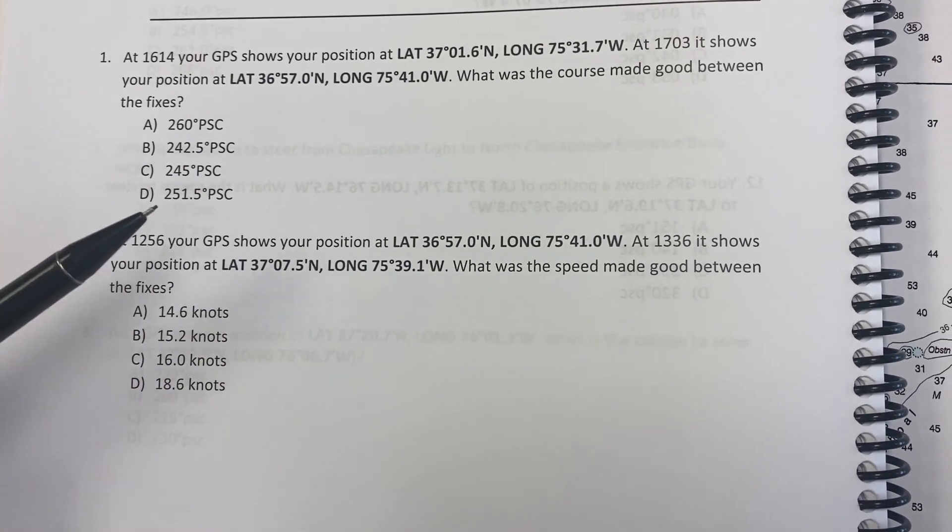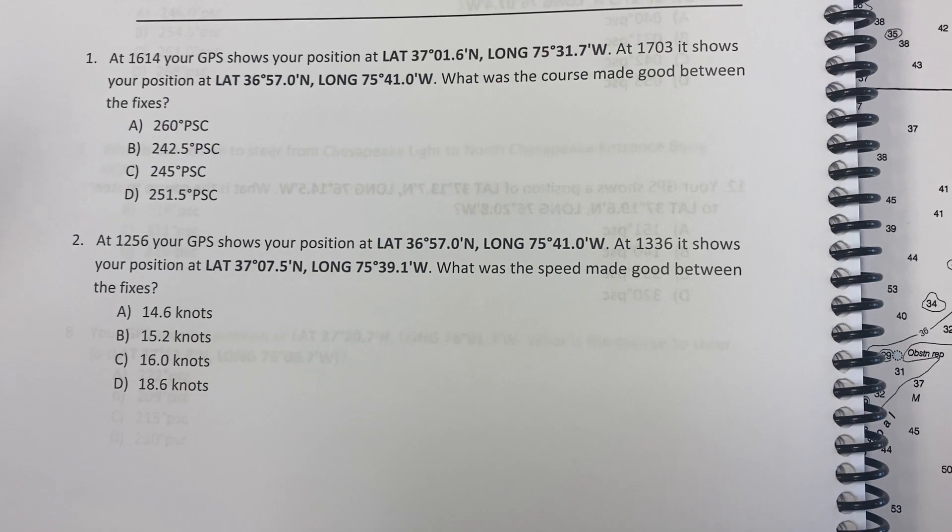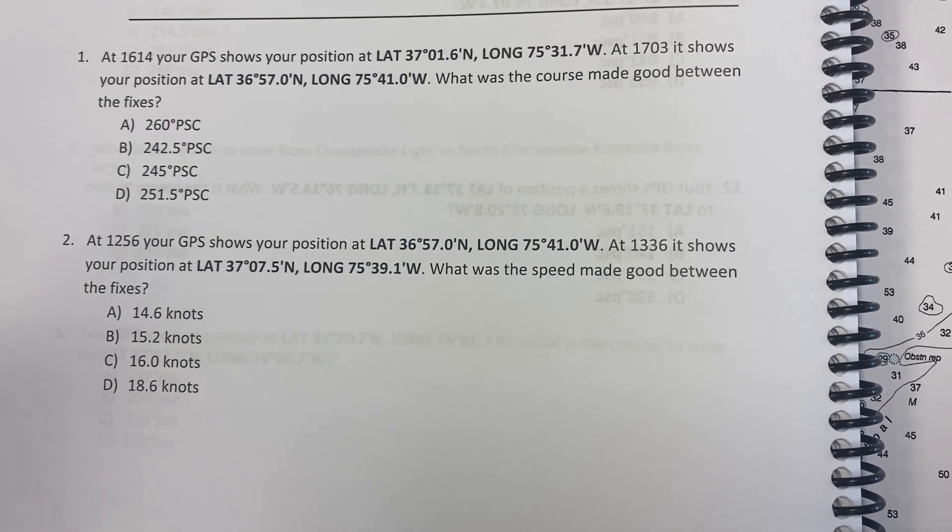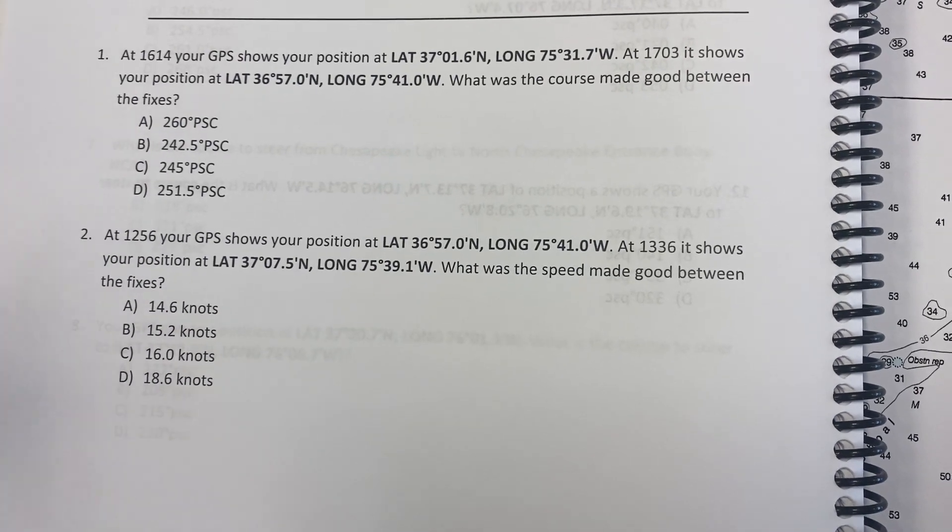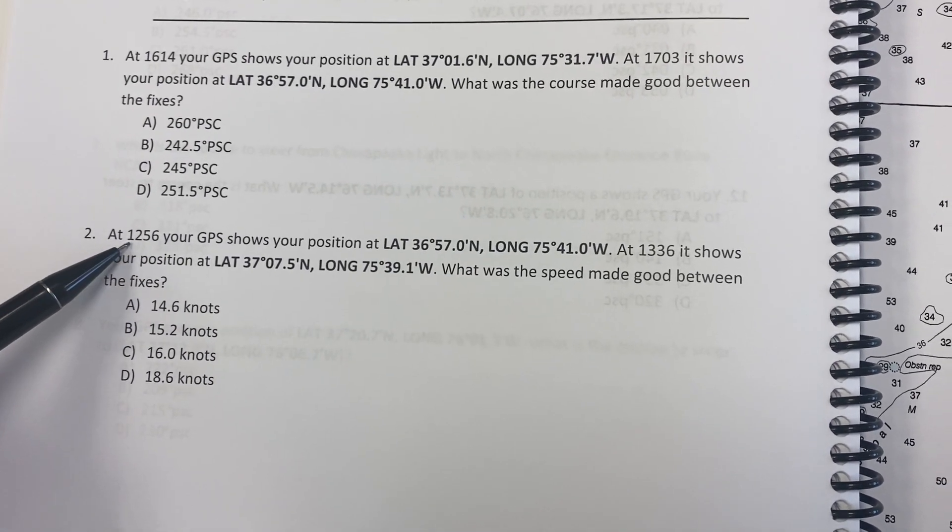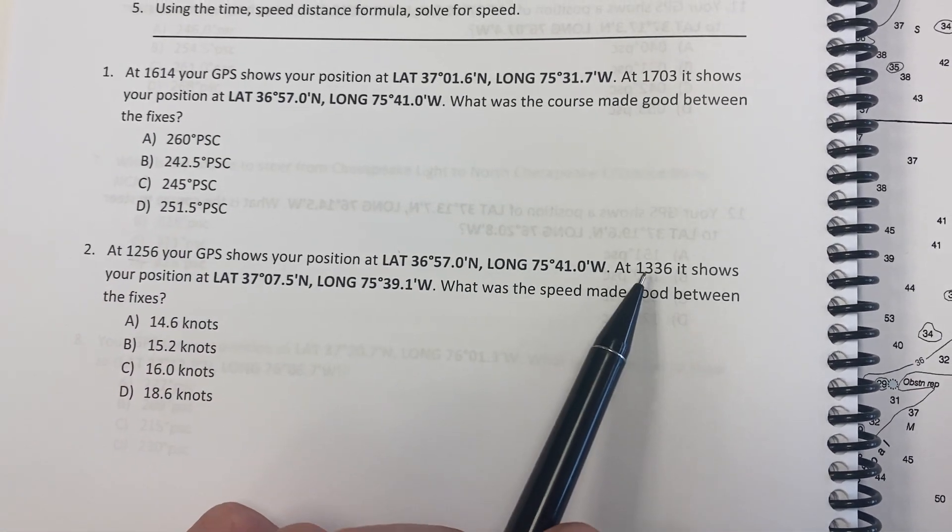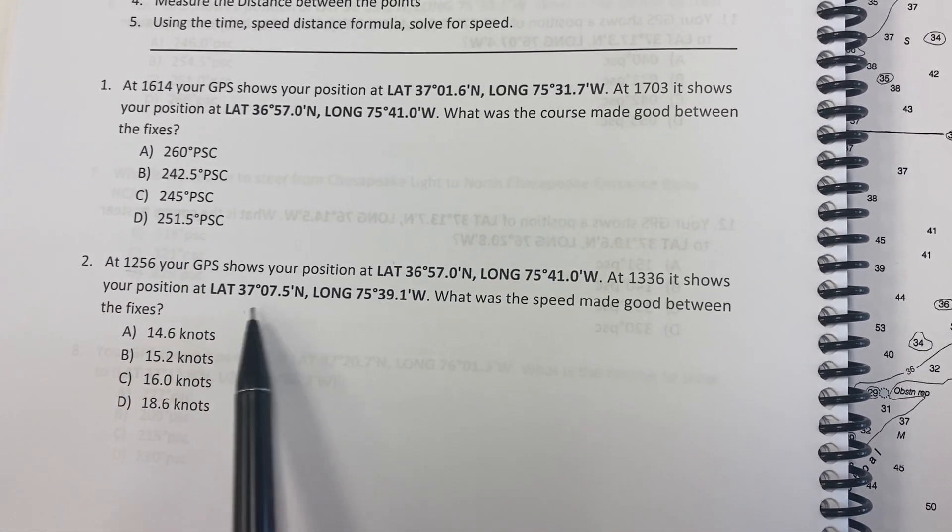There's our first point, there's our second point. It's asking us what our speed made good is. So it's going to be a 60D street problem or a time-speed-distance problem. It gives us our first time here for the first point, and then 1336 is our second point here.